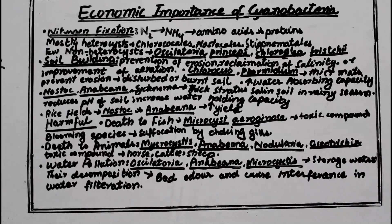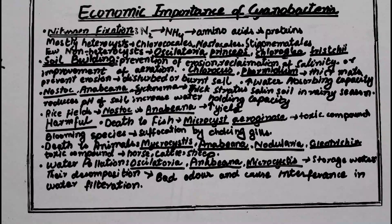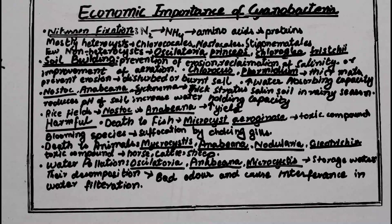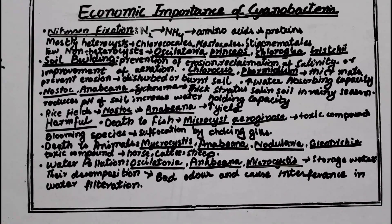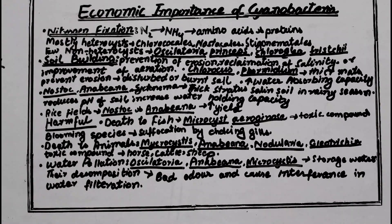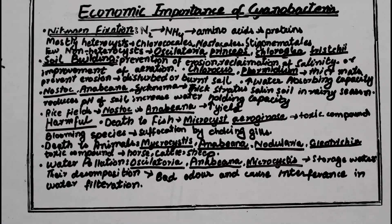Nostoc, Anabaena, and Cylindrospermum are species that form a thick stratum on the surface of saline soil during the rainy season. If they are present, they prevent erosion and reclaim the soil. They also increase the water holding capacity, reduce the pH, and this reduction of pH is most important for yield production in rice fields.